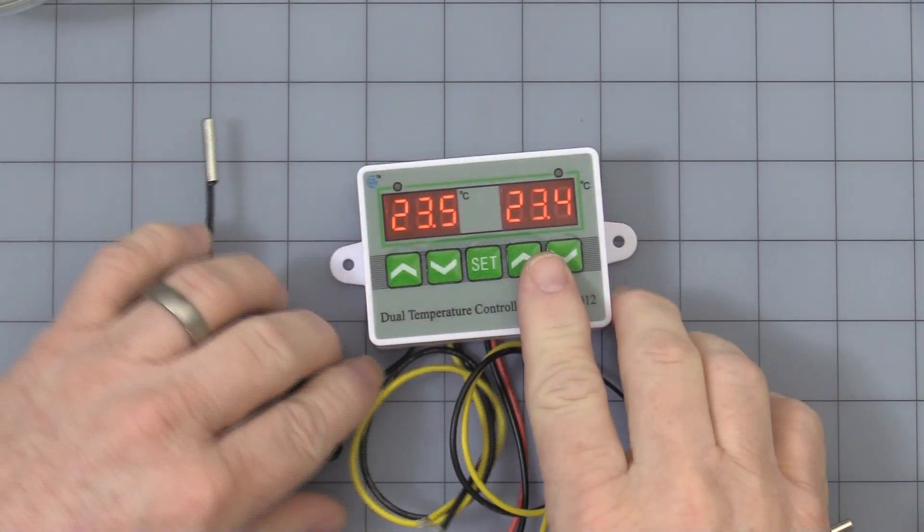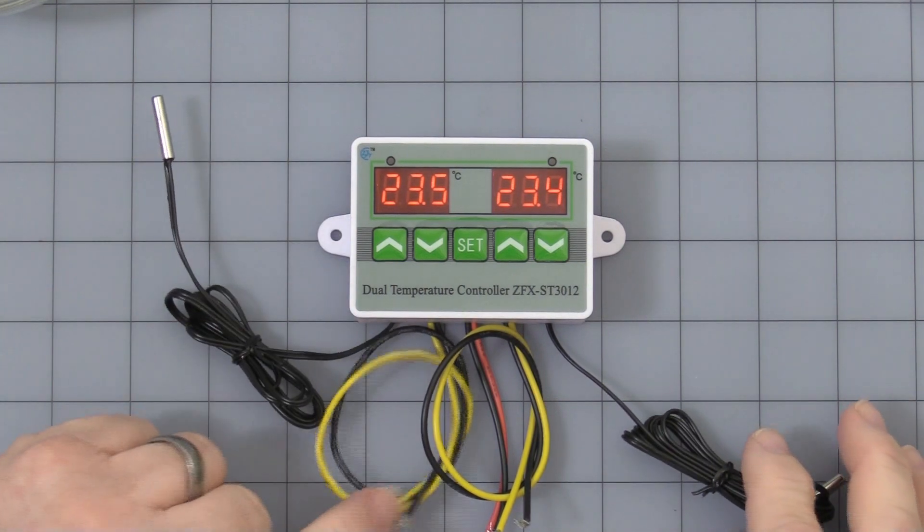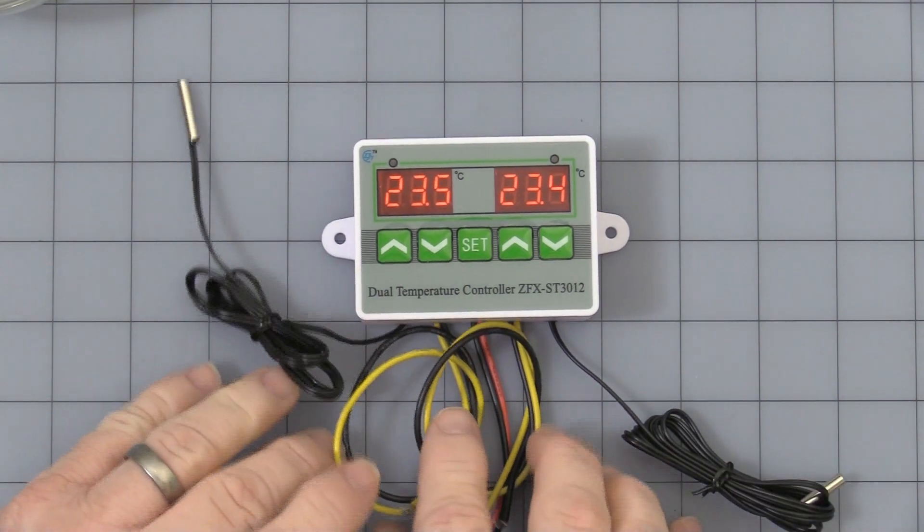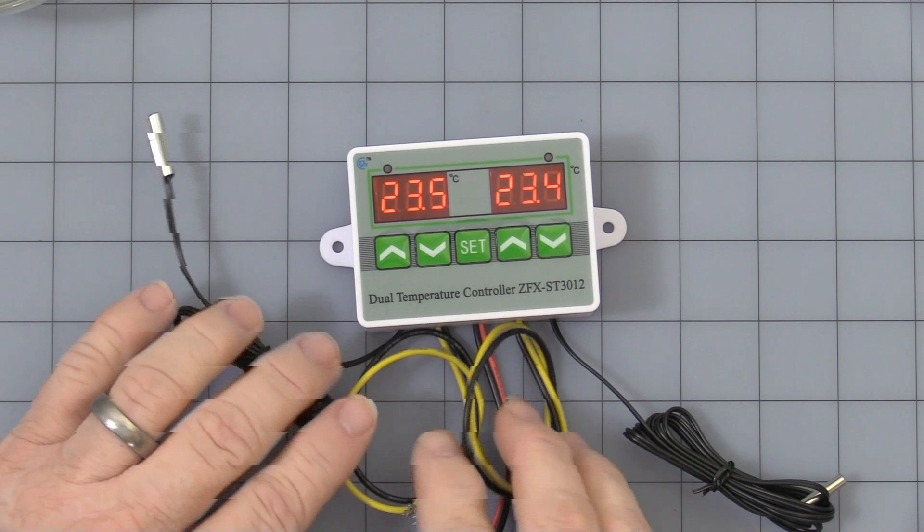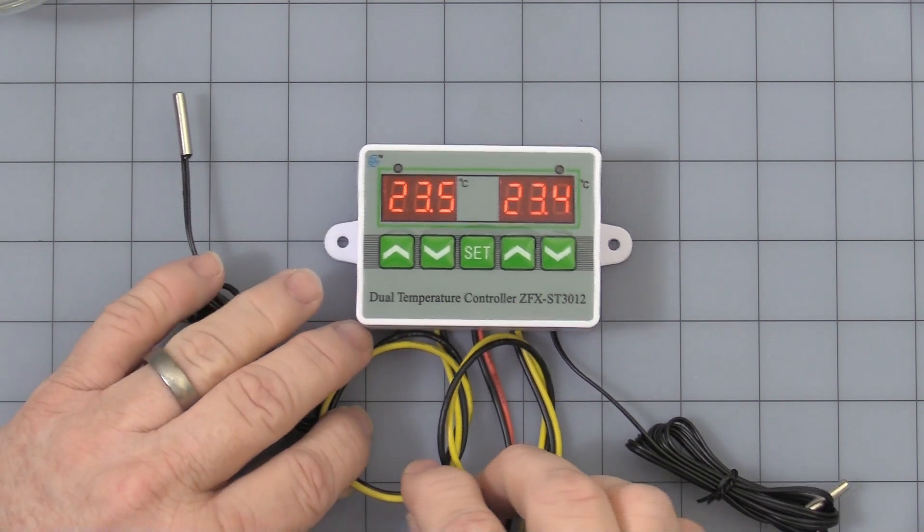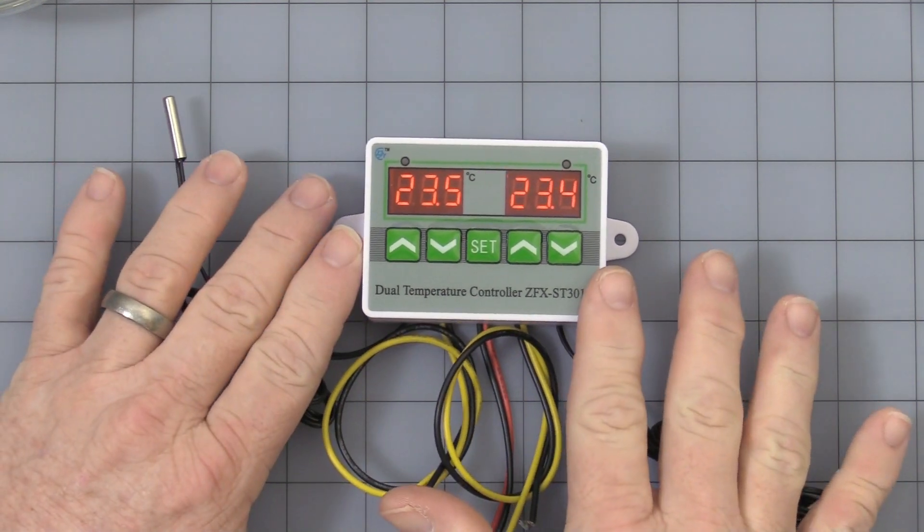The relay is rated at 20 amps, but it is 16 gauge wire, so you need to be a little careful. I don't think you can quite handle that much current on a regular basis. So let's start with the programming.